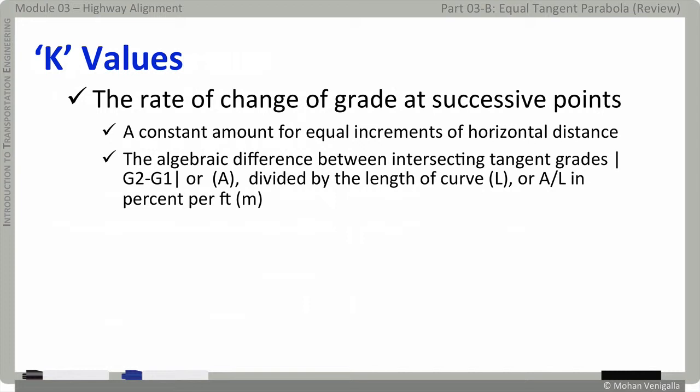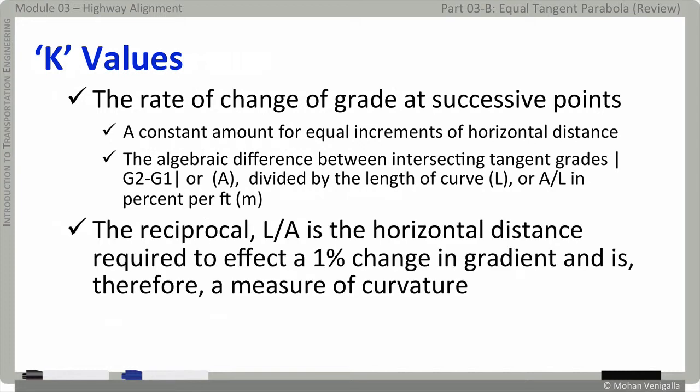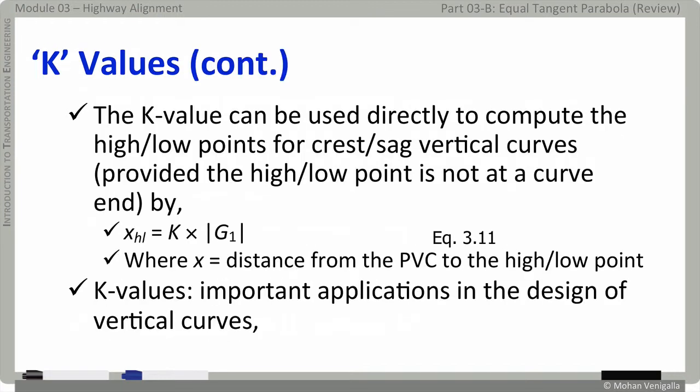The algebraic difference is modulus of G2 minus G1, and that is A value. Now, you take the reciprocal of that, which is L divided by A, which is the horizontal distance required to affect a one-percent change in gradient. And it is, therefore, a measure of curvature. And the quantity L/A is termed K. L over A is termed K. And it is a very important and a beautiful parameter, which you will use all through the design process, all through design of vertical curves.